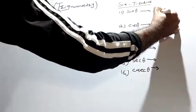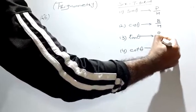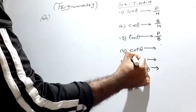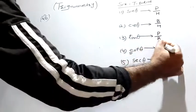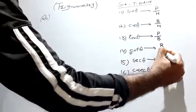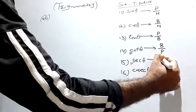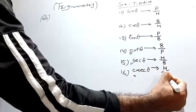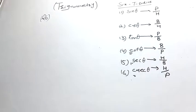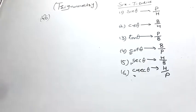Sin theta is equal to perpendicular upon hypotenuse (P/H). Cos theta is base upon hypotenuse (B/H). Tan theta is perpendicular upon base (P/B). Cot theta is base upon perpendicular (B/P). Sec theta is H upon B, and cosec theta is H upon P.